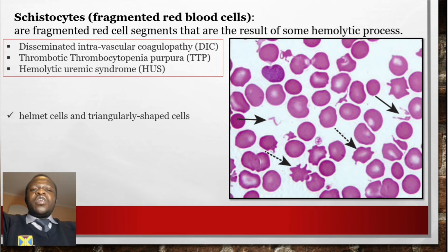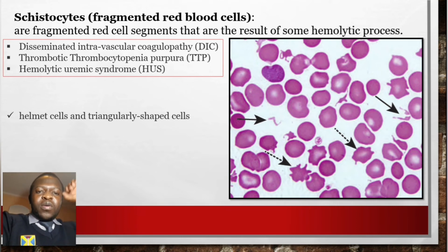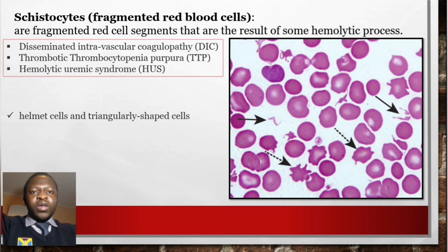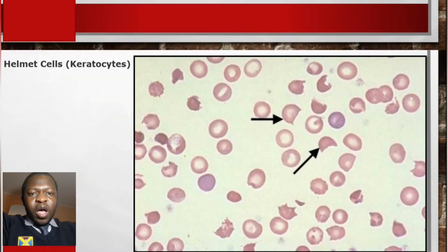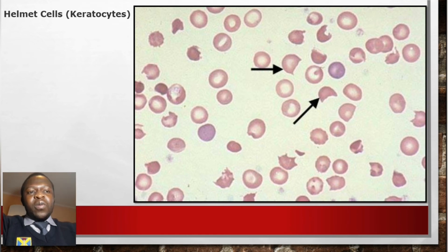Schistocytes are fragmented red blood cell segments resulting from hemolysis. They are mainly associated with disseminated intravascular coagulation (DIC), thrombotic thrombocytopenic purpura, and hemolytic uremic syndrome. There are two common types: helmet cells and triangular-shaped cells — helmet cells are also called keratocytes.